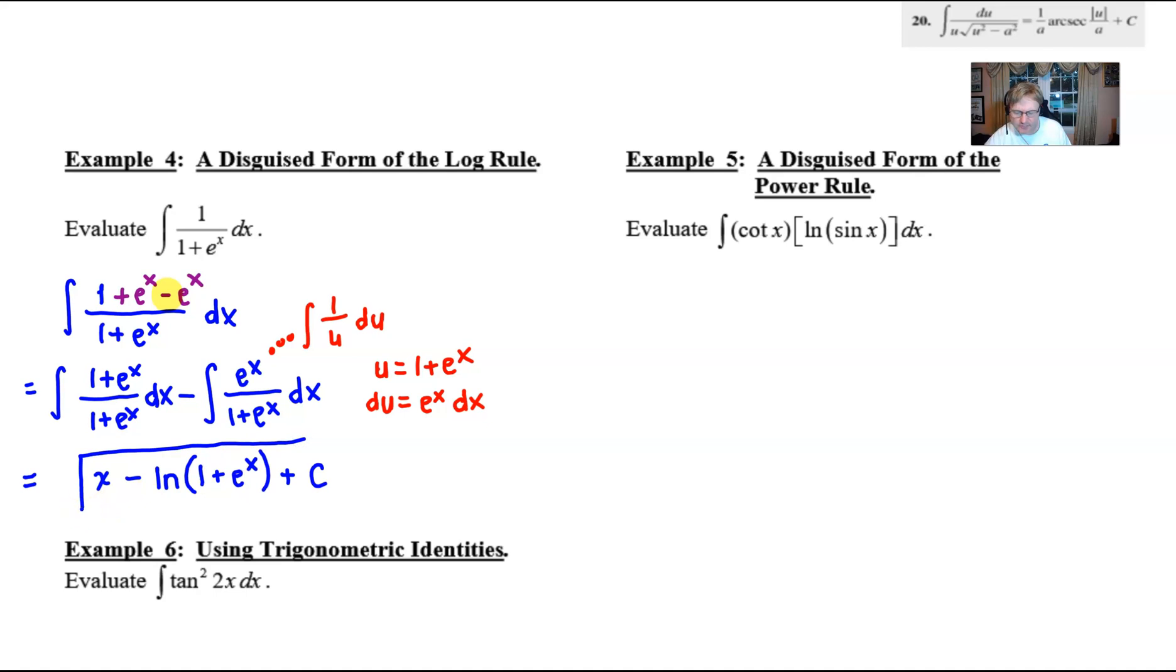So I guess the name disguised form of the log rule wasn't completely untrue. We did use a one over u form for this but it's what we had to do to make that happen which was a bit tricky. I don't mean for this example to scare you but I think whenever you exhaust all other possibilities you might want to think in the back of your mind is there something that you can add and then subtract that would allow you to split the integral up in order to have a better chance at finding the antiderivative. We're going to take a look at example five and example six in our next two videos to round out our review of AB before we move on to BC techniques. Anyway I hope this certainly helps and we look forward to seeing you at the next video.